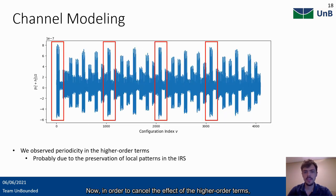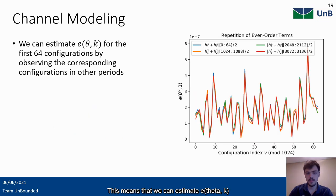Now, in order to cancel the effect of the higher order terms, we noted a periodic behavior of these terms. In every 1024 configurations, the pattern seems to repeat. We call each period a sub-block. This means that we can estimate e theta k for the first 64 configurations by observing the corresponding configurations in other sub-blocks. This is illustrated in this graph, where we compare the first 64 values of the higher order terms for the four different sub-blocks, and we show that they, in fact, are pretty close.